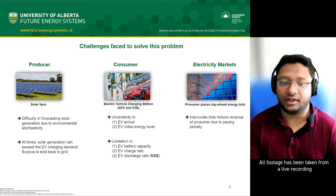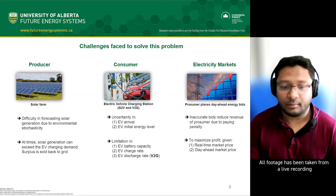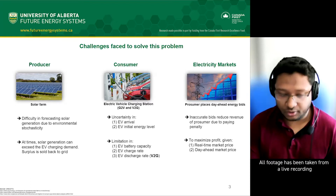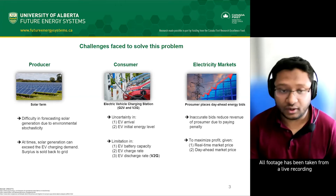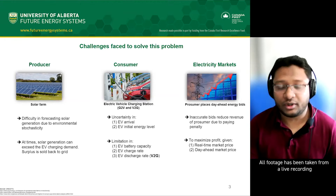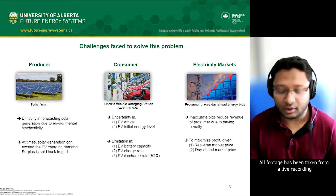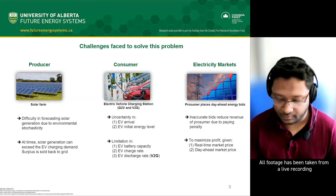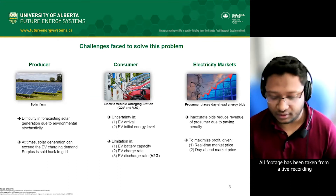At certain times, solar generation can exceed EV charging demand, creating surplus energy that must be sold back to the grid. We also have to keep in mind two types of prices: real-time price and the day-ahead price. When selling, we need to maximize profit across these two markets. Our research attempts to solve all these uncertainties to find maximum profit for the prosumer while making solar panels and EVs easier to integrate in the market.